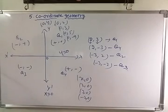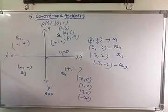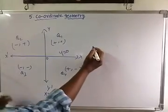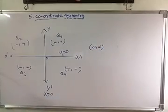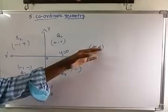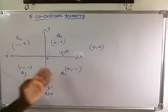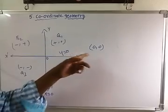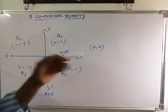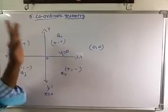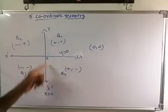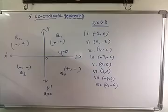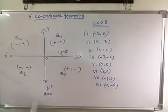Now, in which quadrant does (0,0) lie? Is it Q1, Q2, Q3, or Q4? No — (0,0) is lying on both the x-axis and the y-axis. So (0,0) does not lie in any quadrant; it lies on both axes. Now we are going to Exercise 5.2.